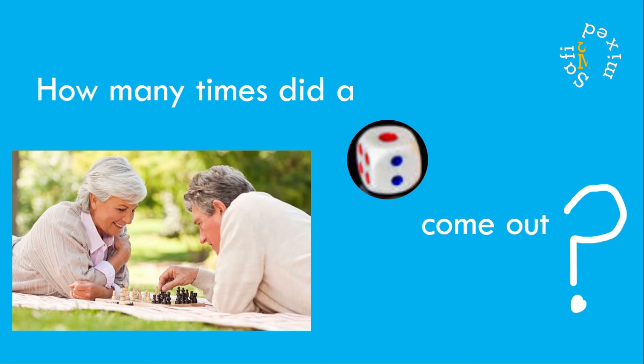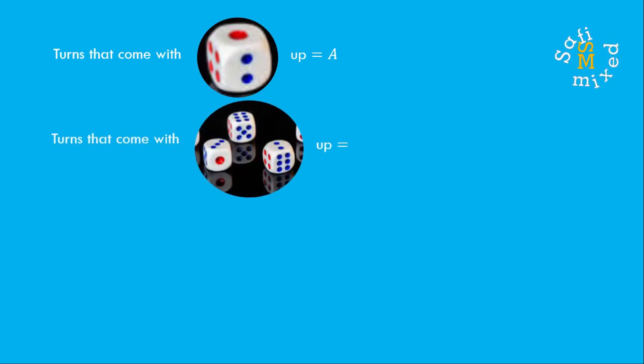I will solve it by constructing two algebraic equations. Let the turns that come with one be denoted with capital A, and the turns with other outcomes be denoted with B. Then I can write A plus B equals 30, and 50 times A minus 10 times B equals 0, because both players ended up with no loss, no gain.